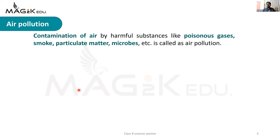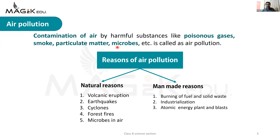Air pollution has two types of reasons - natural reasons and man-made reasons. Natural reasons which come from nature, and man-made reasons which means humans - we are responsible. Natural reasons include volcanic eruption, earthquake, cyclones, and forest fires. Man-made reasons include burning of fuel and solid waste, industrialization, and atomic energy plants and blasts.